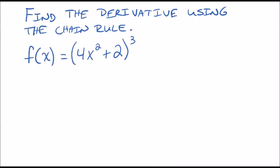All right, let's take a look at an example here. We're going to find the derivative using the chain rule. So we have here f of x equals 4x squared plus 2 to the third power.